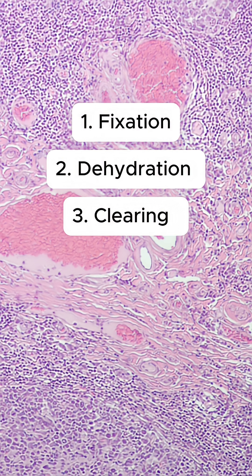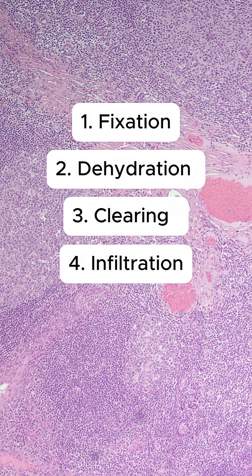Three: clearing. This step removes the alcohol and replaces it with a substance that is miscible with the embedding medium. Four: infiltration. Most commonly, the tissue is infiltrated with molten paraffin wax, which supports the tissue when cooled down and hardened. This allows for ultra-thin sectioning at microtomy.